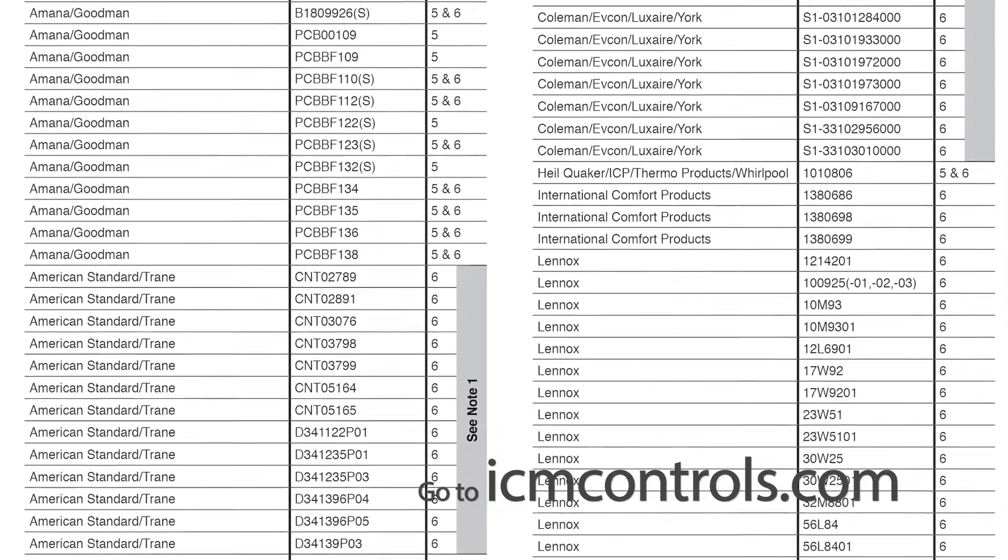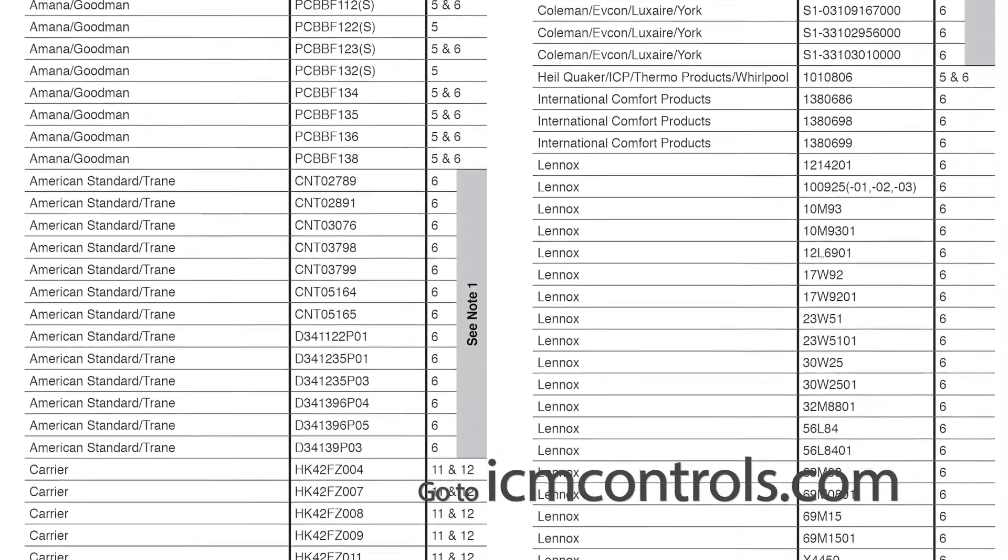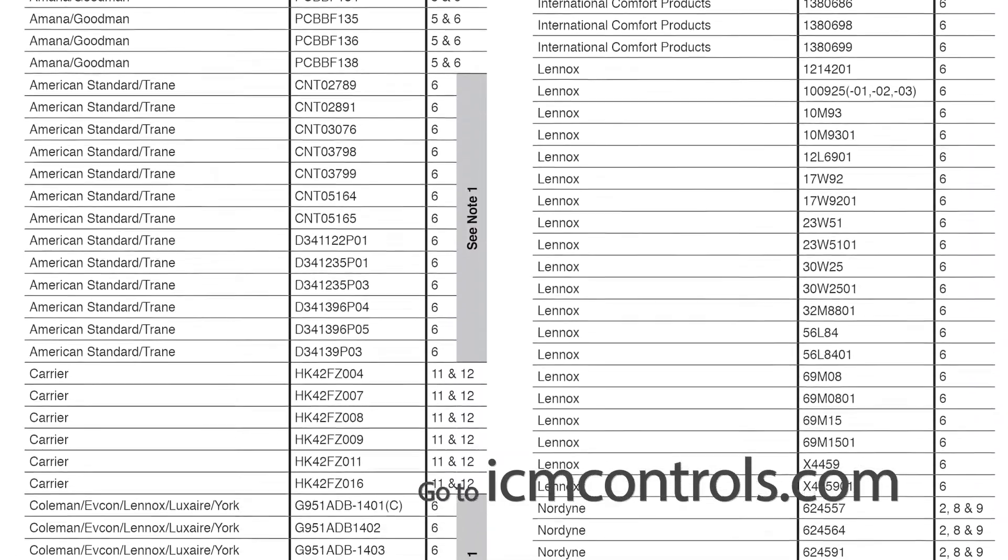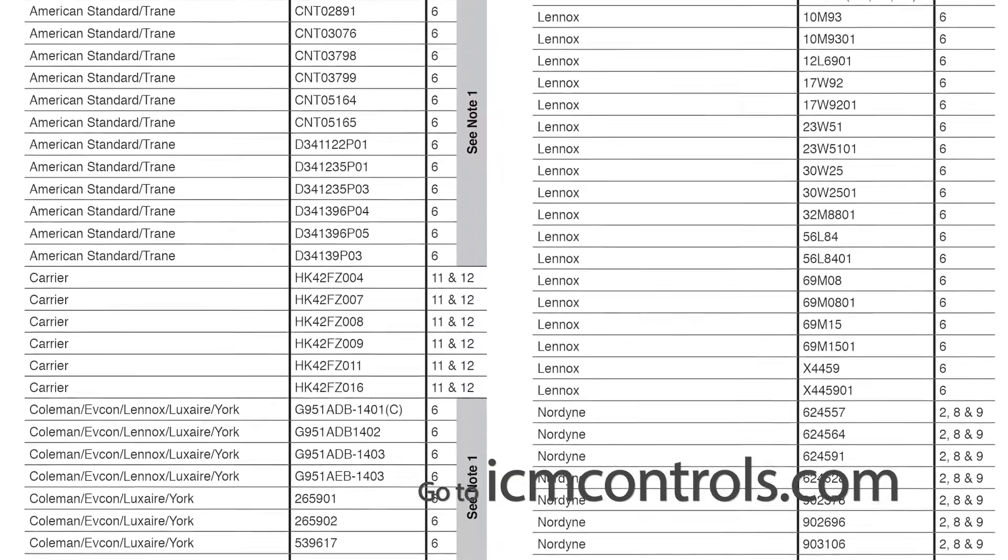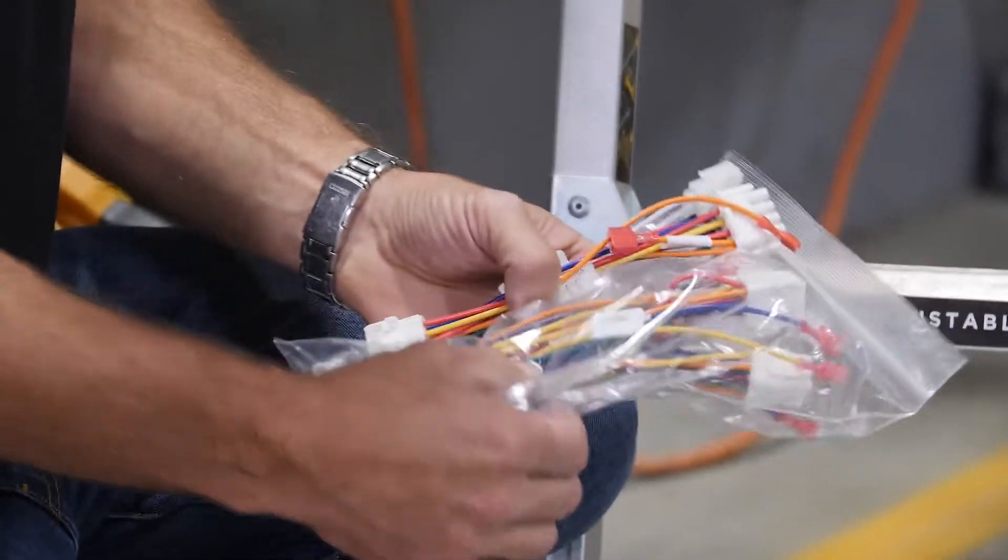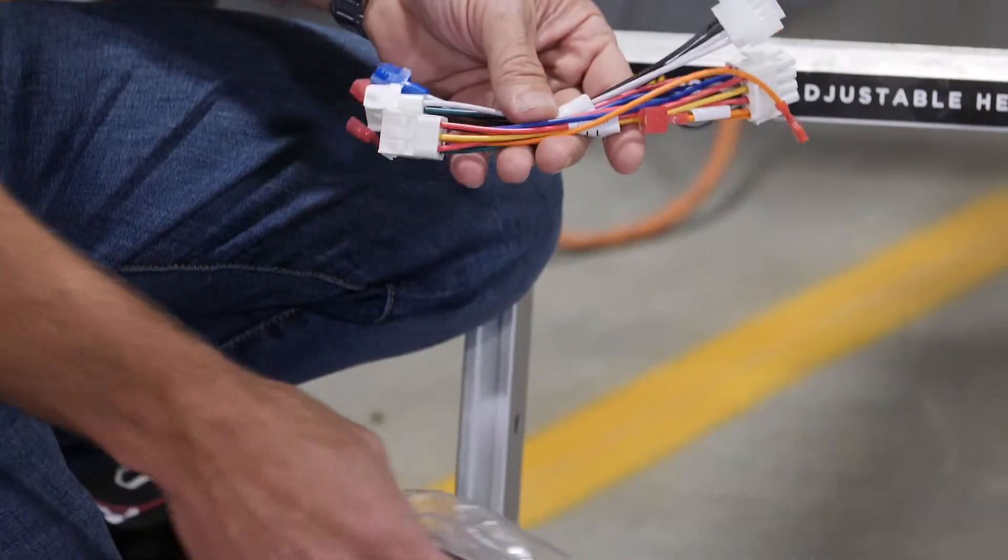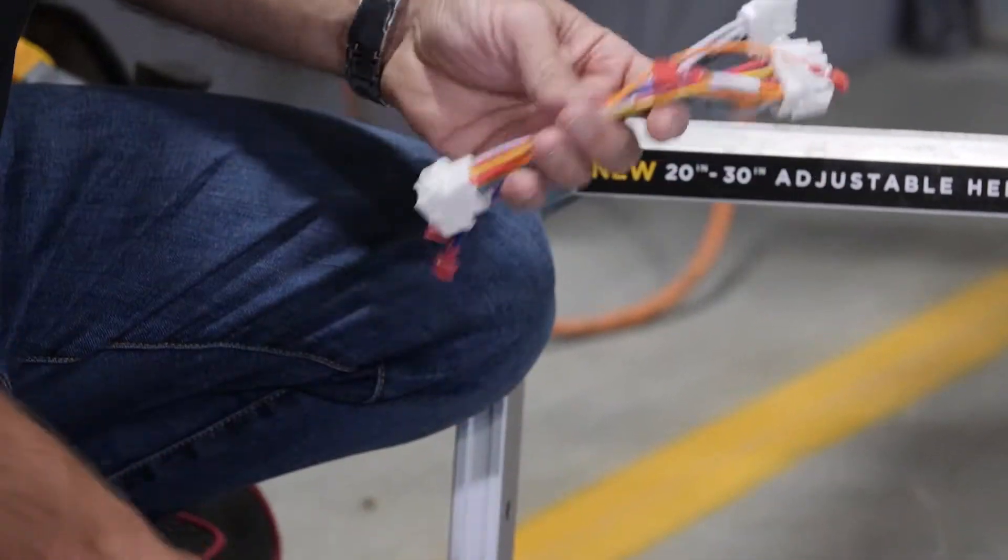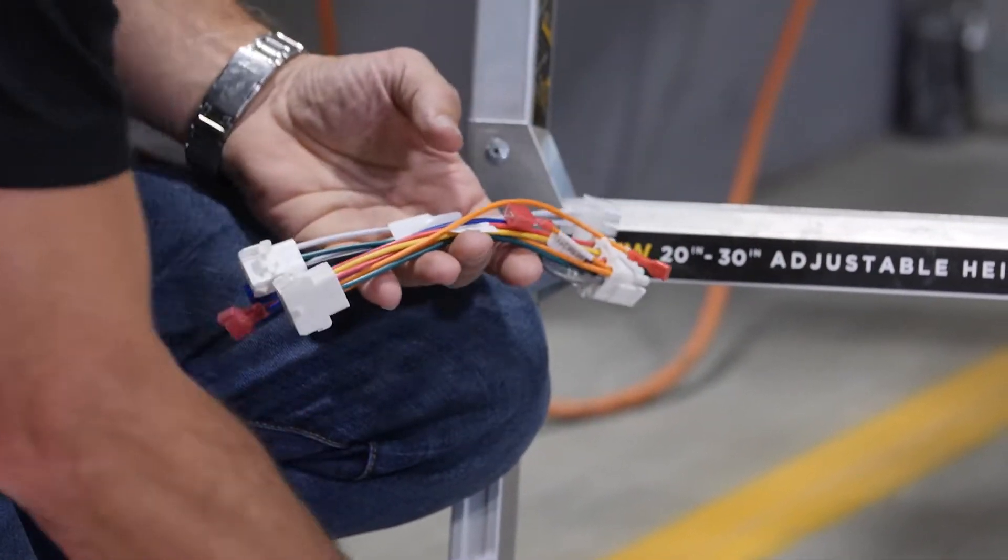When we go down to Carrier, we go to the right number. We have the correct board number here, and it's telling us that we need harnesses 11 and 12. So go to your bag of harnesses here, and you're going to open up and they're all labeled. We're going to pull out harness 11 and harness number 12.